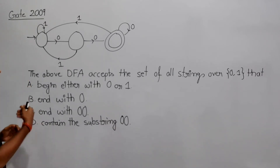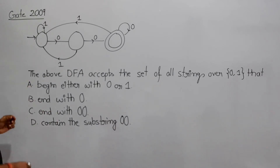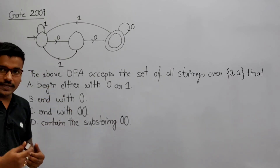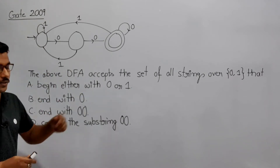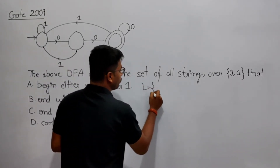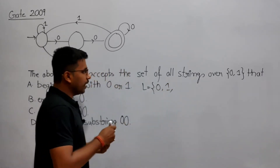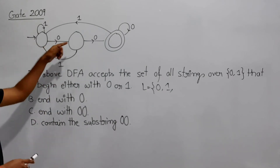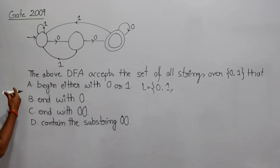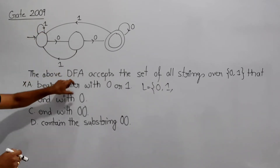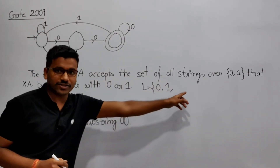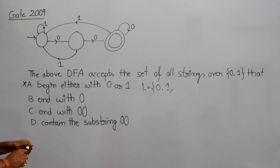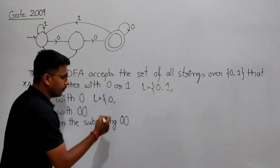Option A is saying that the language contains strings beginning either with 0 or 1. Now the string '0' alone — reading '0' it is not reaching a final state, so it gets rejected. If this were the correct language, the DFA should accept all strings belonging to it, but it is not accepting '0', so option A is incorrect.